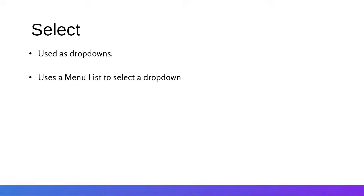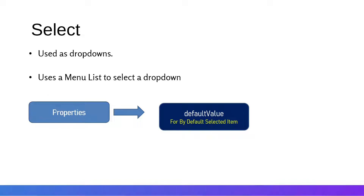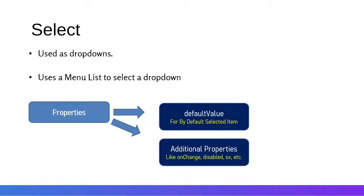The next input element is the Select, which is used as a drop-down inside Material UI. In HTML, it uses a menu list to select a drop-down item. The select tag creates a drop-down list where one item can be selected. Properties include a default value for the pre-selected value, onChange, disabled, and sx for styling.